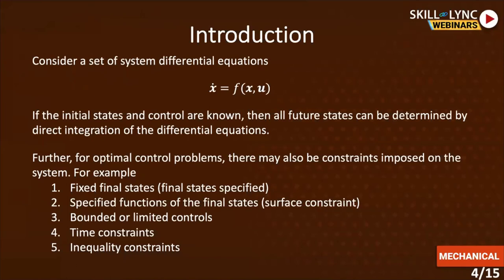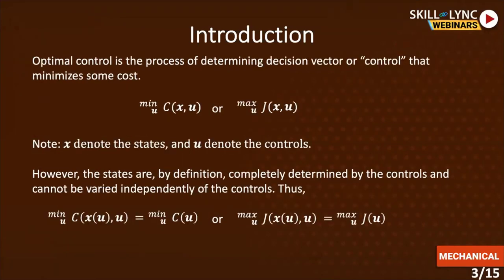For example, constraints include: fixed final state, where the final states have been specified; specified functions of the final states, that is the surface constraint; bounded or limited controls; time constraints; and inequality constraints. Note that C and J are scalar functions — they give a scalar value, and that is what we are minimizing. The distinction between the states and the control is made at the start of the problem itself.